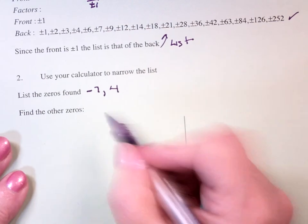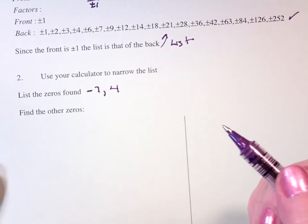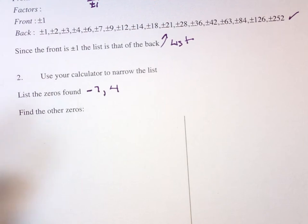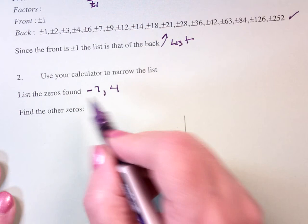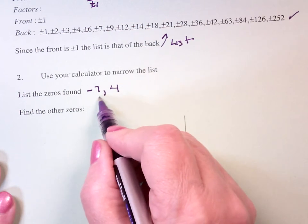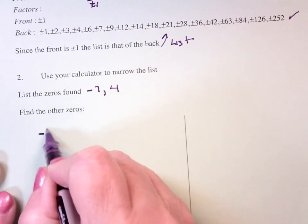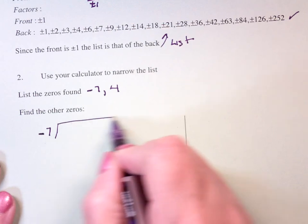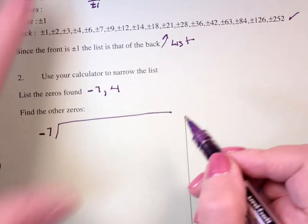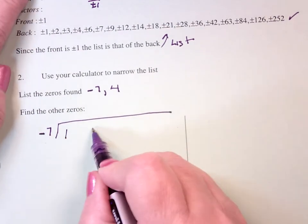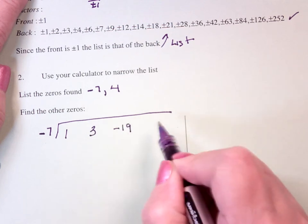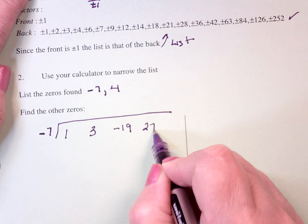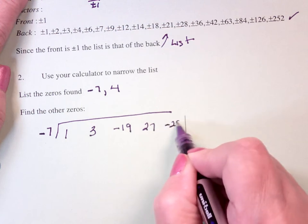Now, we want to find the other zeroes. Now, we do that using synthetic division. So, it doesn't matter whether you start with negative 7 or 4, whatever you want to do. I'm going to start with negative 7. Why? Because that's what I wrote down first. So, that says, I know that negative 7 is a zero. So, I'm going to divide it into my polynomial, which is 1x to the 4th, 3x cubed, negative 19x squared, plus 27x, minus 252.